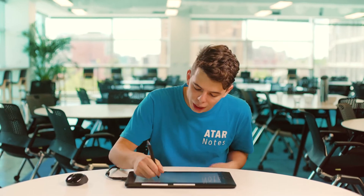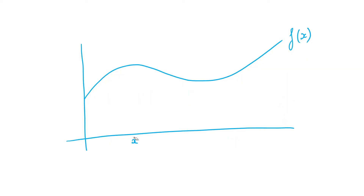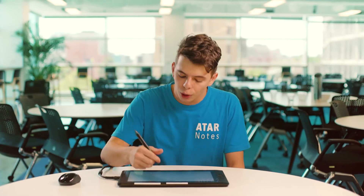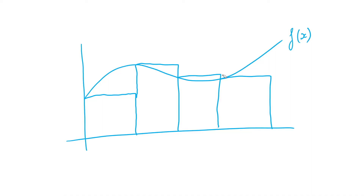So what would happen if we were to make them half the width? What we can hopefully see happening is that our margin for error is decreasing. Although it may not be as prominent yet, it is in fact getting smaller and smaller. What we can draw from this is that as the width of our rectangles decreases, the accuracy of our estimation increases.